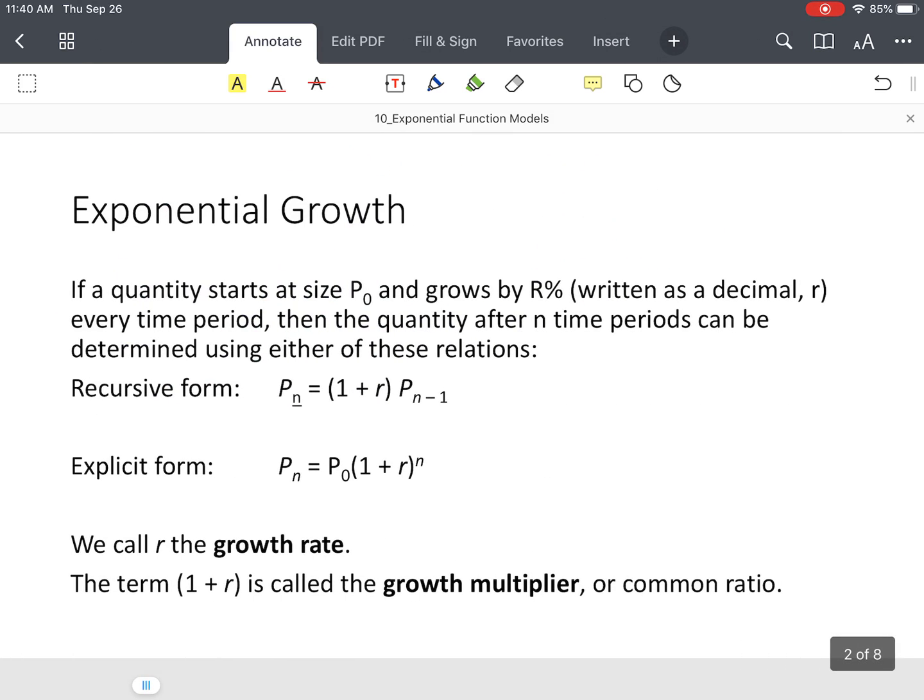All right, so let's start out with our exponential growth. Now, you can define it two different ways. Let's start out, you have P naught, which is that's simply your starting value. Sometimes, they'll call it your initial value. So, that's your initial value or starting value. And it simply says that some initial value is growing by a certain rate, which is R%, every time period. Now, that could be every year. And then, after so many time periods, we want to find a new value.